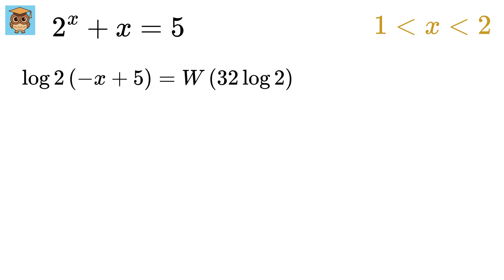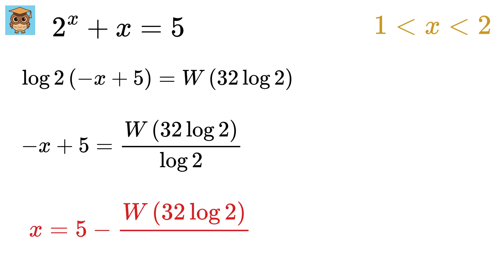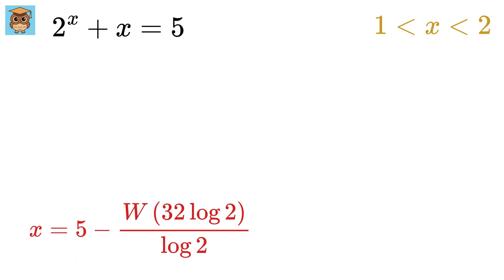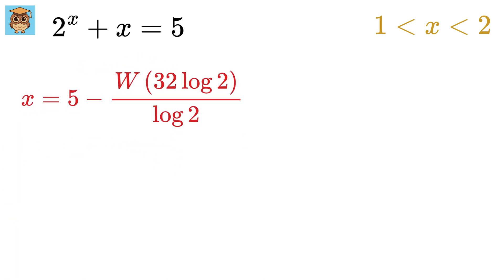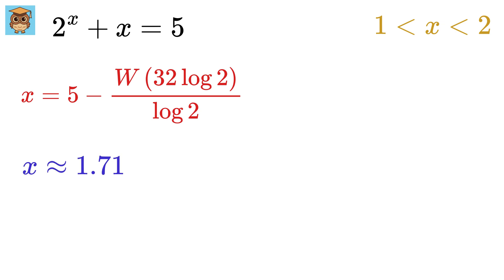So minus x plus 5 equals W of 32 log 2 divided by log 2. So x equals 5 minus W of 32 log 2 divided by log 2. And we are done. You can either leave this expression like this, or we can also find its approximate value, which turns out to be 1.716. And that's it.